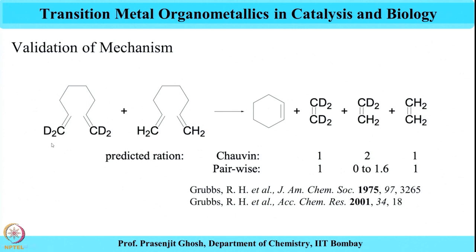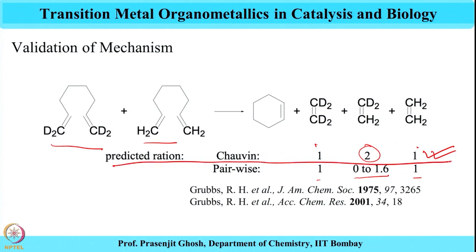For these two types of olefin, deuterated versus protonated, Grubbs estimated that according to the pairwise mechanism the ratio of D4 : D2 : D0 products would be 1 : 0 : 1.6 : 1, whereas for Chauvin's non-pairwise mechanism it would be 1 : 2 : 1. The experimental observations matched Chauvin's prediction, giving a verdict in favour of the non-pairwise mechanism. This was a fantastic set of experiments performed by Grubbs that finally settled the issue, put all the confusion to rest, and gave a verdict in favour of Chauvin's mechanism.